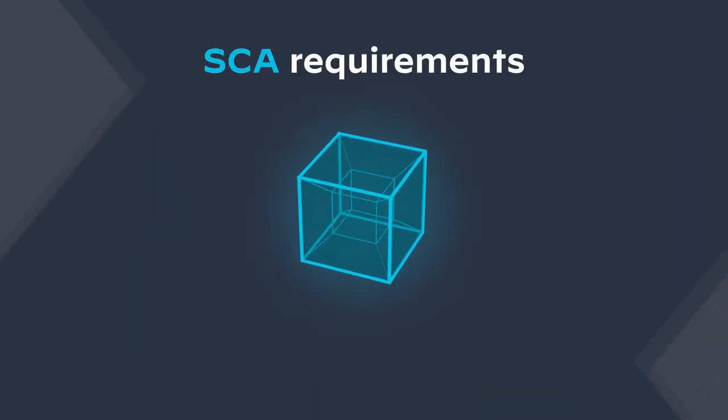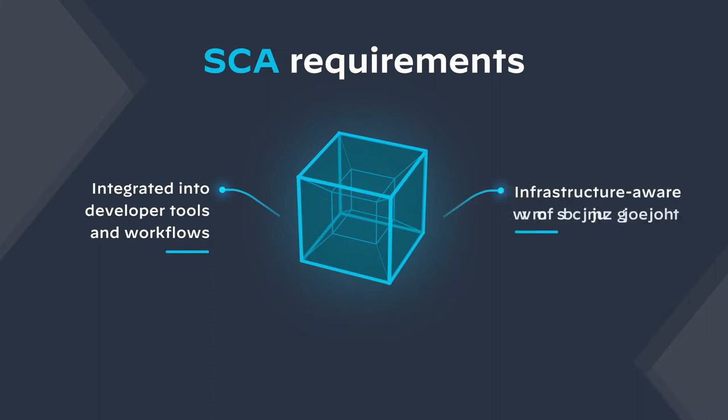With the right approach for SCA, you should be able to automatically and continually identify vulnerabilities in all your open source dependencies. You should also be able to surface that feedback directly to developers in their existing tools and workloads, and give them the guidance to bump to the best version to avoid any breaking changes.